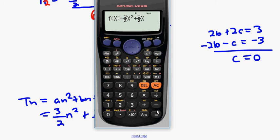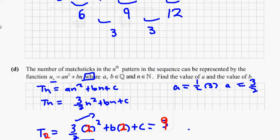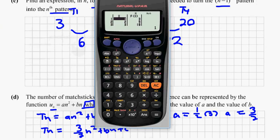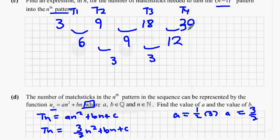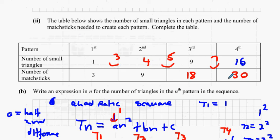Start at one, end at five, step of one. The formula gives three, nine, eighteen, thirty — and yes, the last value is thirty. The formula works. My bad on the earlier error — it was definitely thirty.